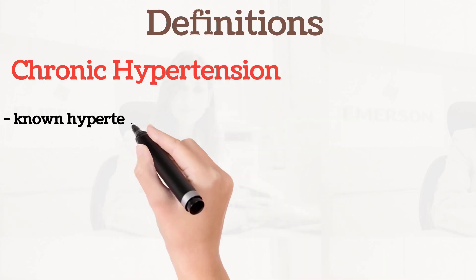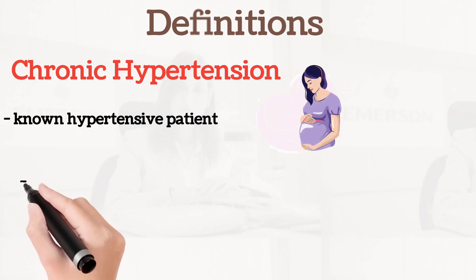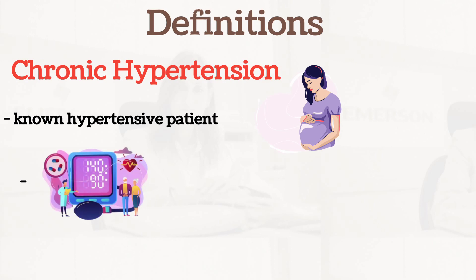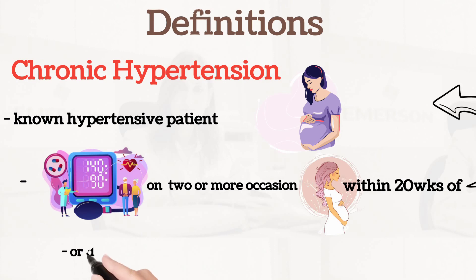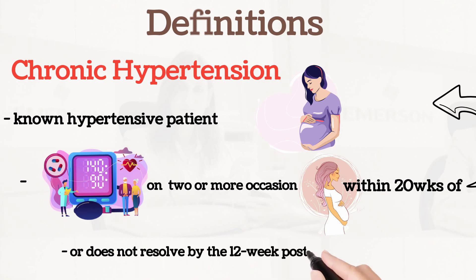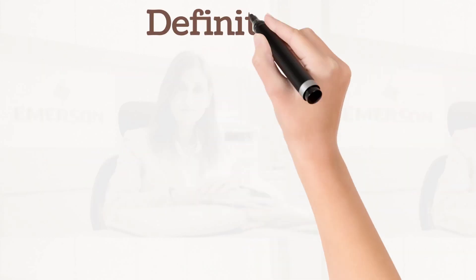Chronic hypertension can be defined as a hypertensive patient who becomes pregnant — chronic hypertension in pregnancy — or having blood pressure of 140 over 90 on two or more occasions during the first 20 weeks of pregnancy, or blood pressure that does not resolve by the 12-week postpartum checkup. That's the definition for chronic hypertension.